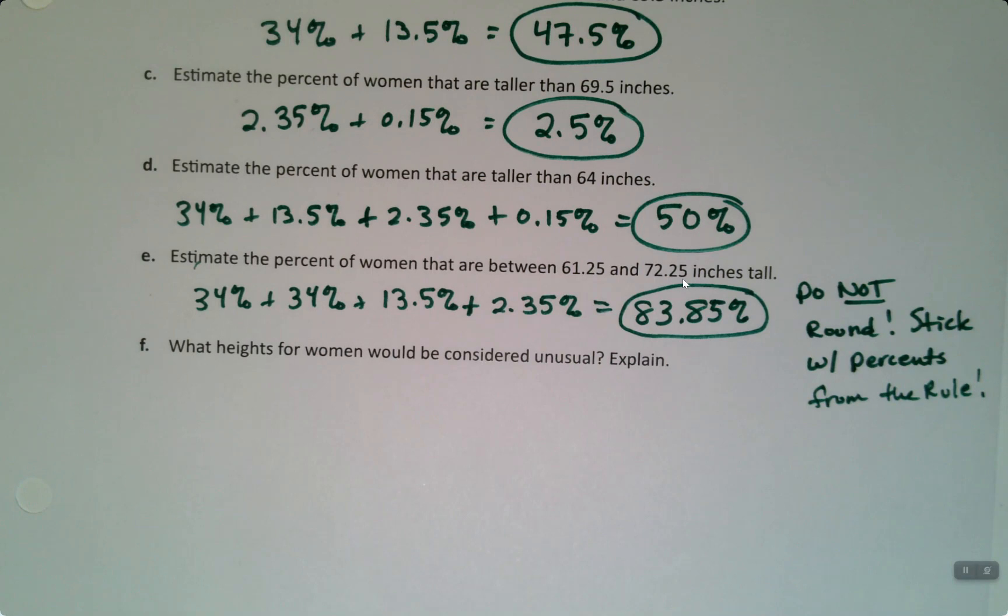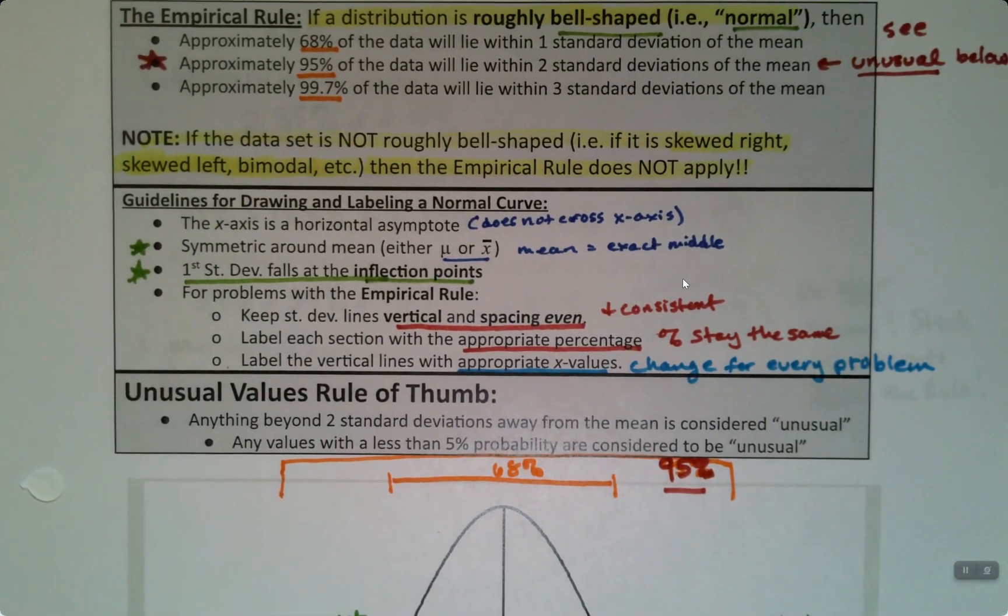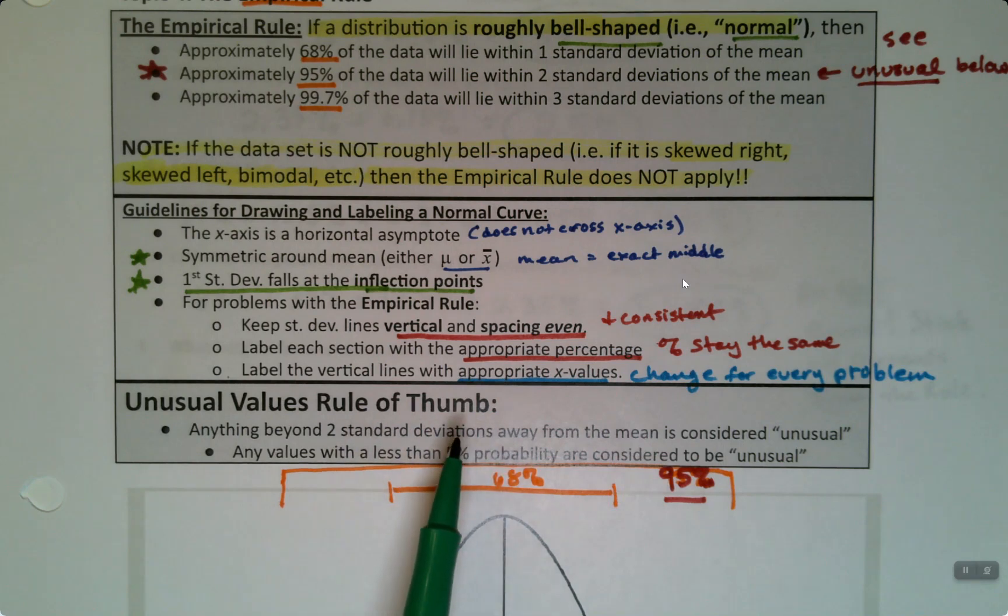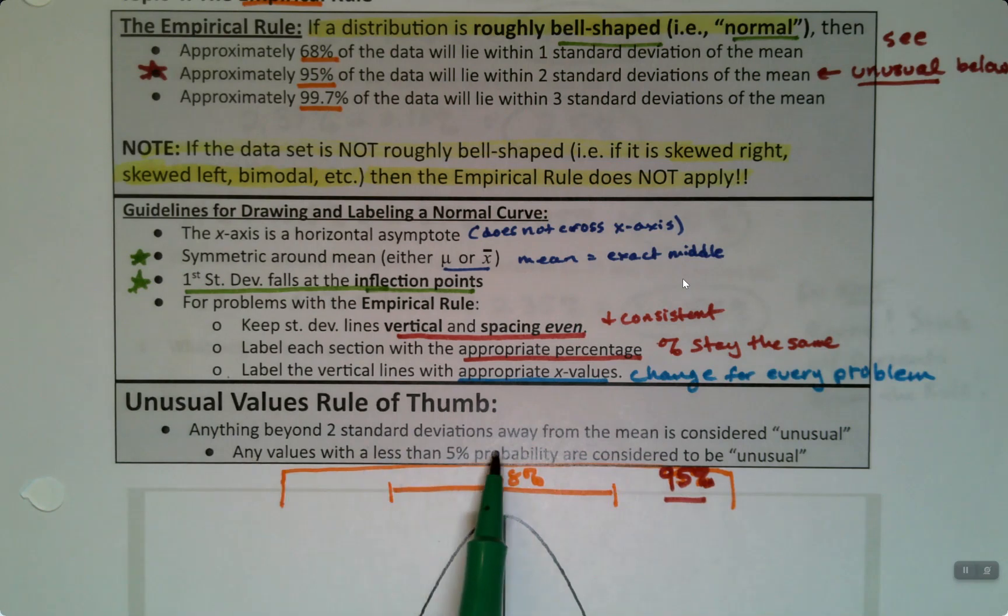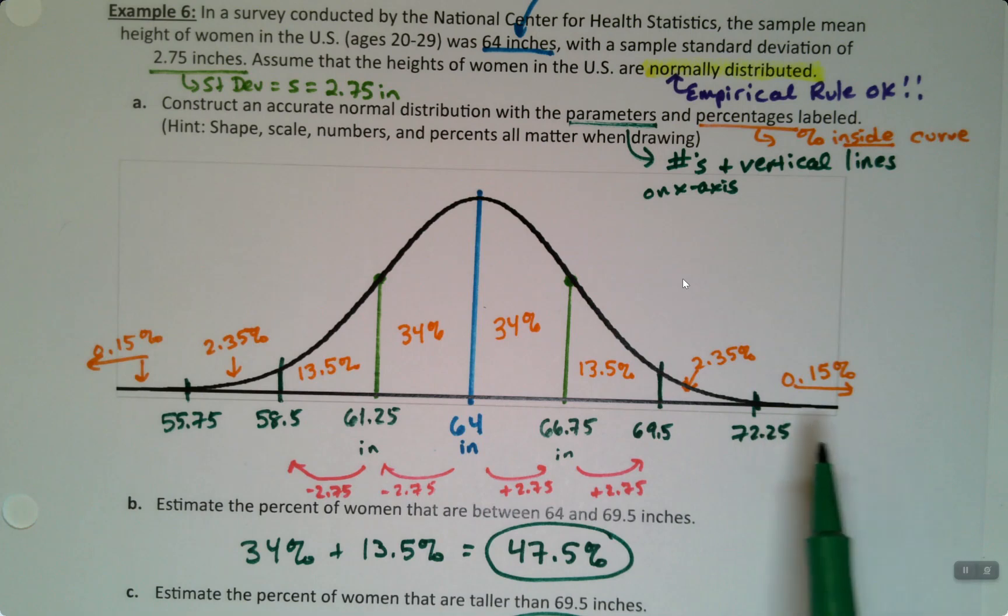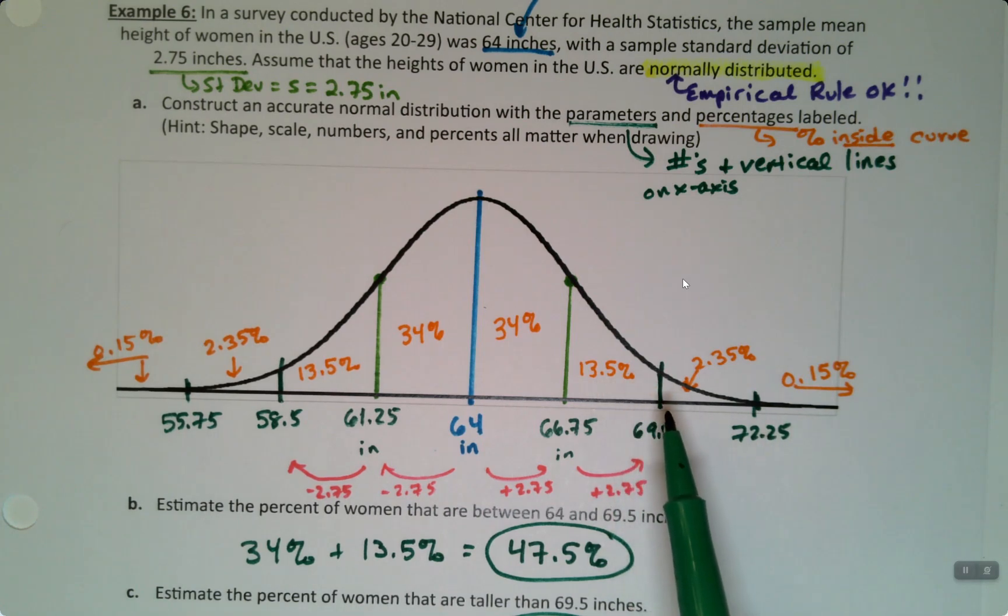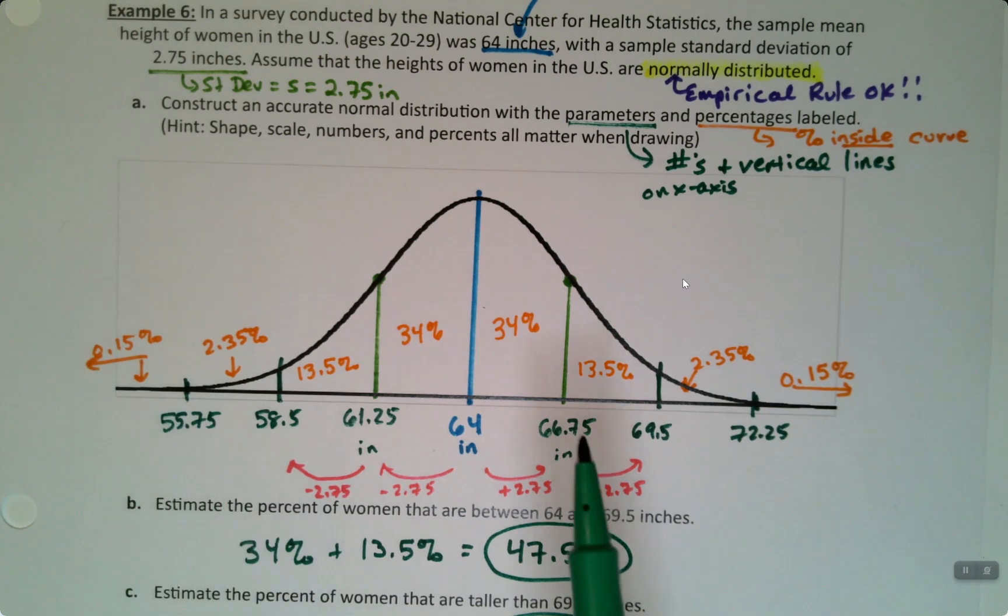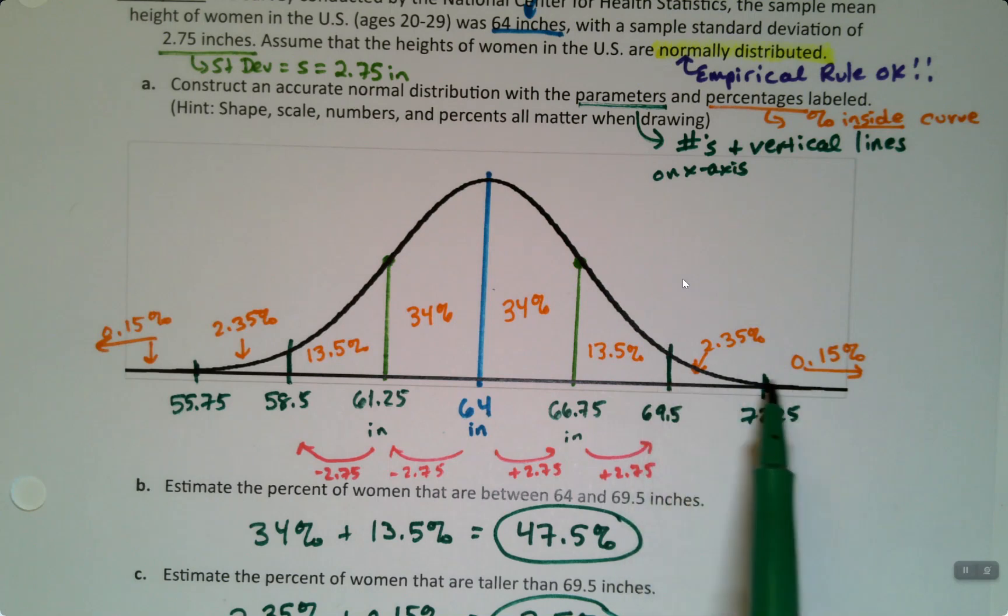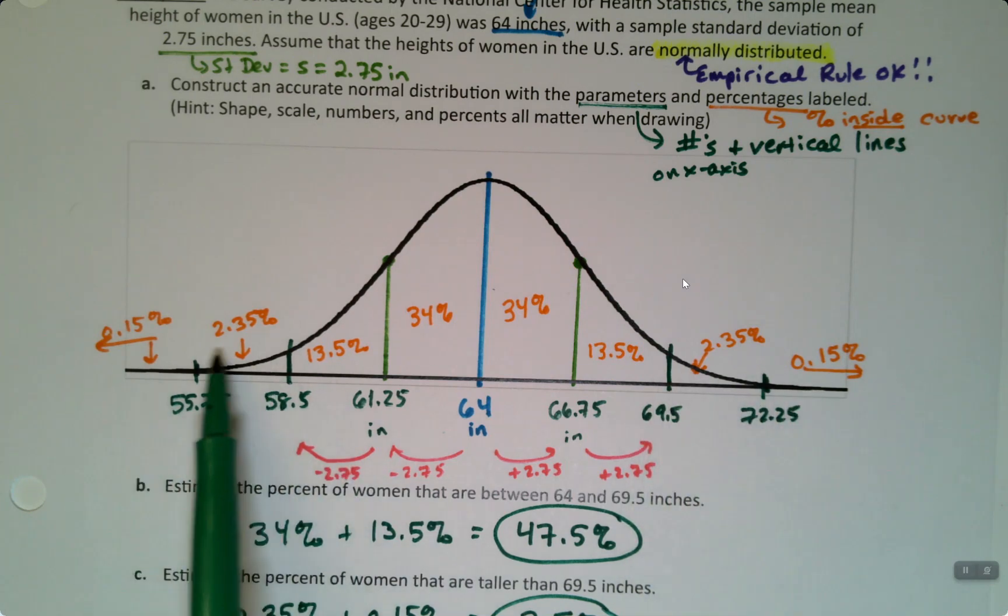Now, were any heights for women considered unusual? Unusual is so important. We talked about it before, but we're going to say it again, which is anything beyond two standard deviations, the same thing that was written in an earlier piece of this section. Anything beyond two standard deviations away from the mean is unusual, or anything with less than 5% probability. So we can see those values, less than 5% would be these ones. So anything past 69.5, which is two standard deviations away, and then two standard deviations away this way. Here's the mean, one standard deviation away, two standard deviations away. So anything past this point is unusual, and anything past this point is unusual.